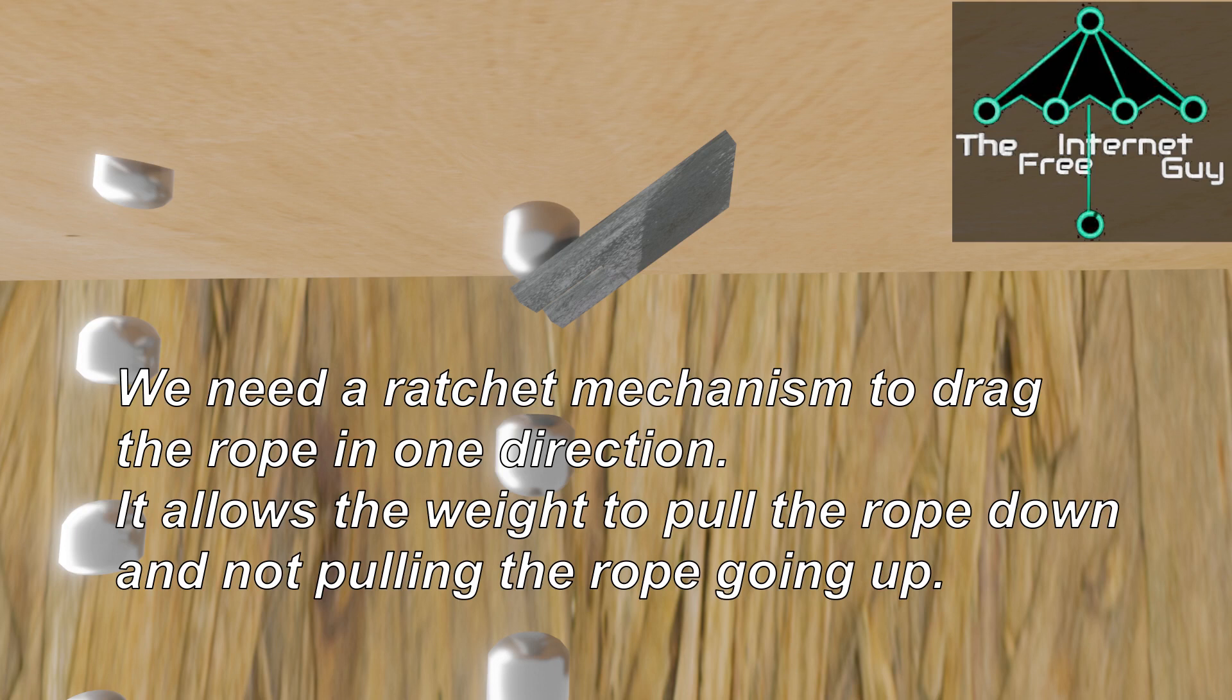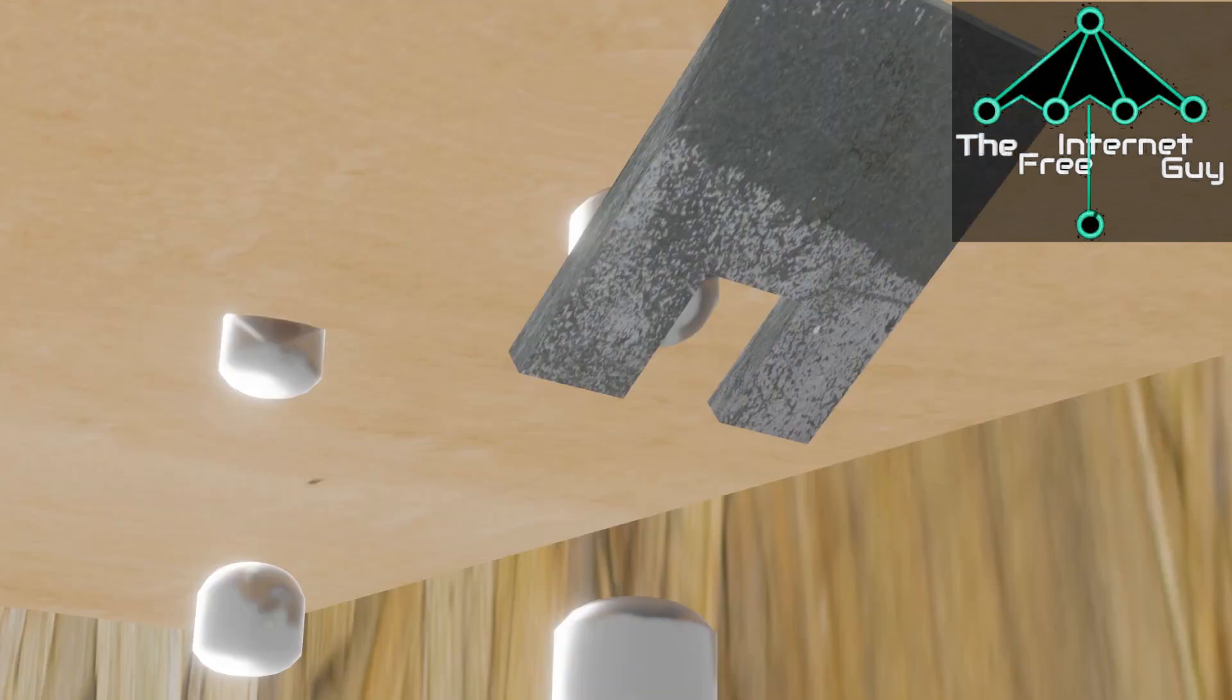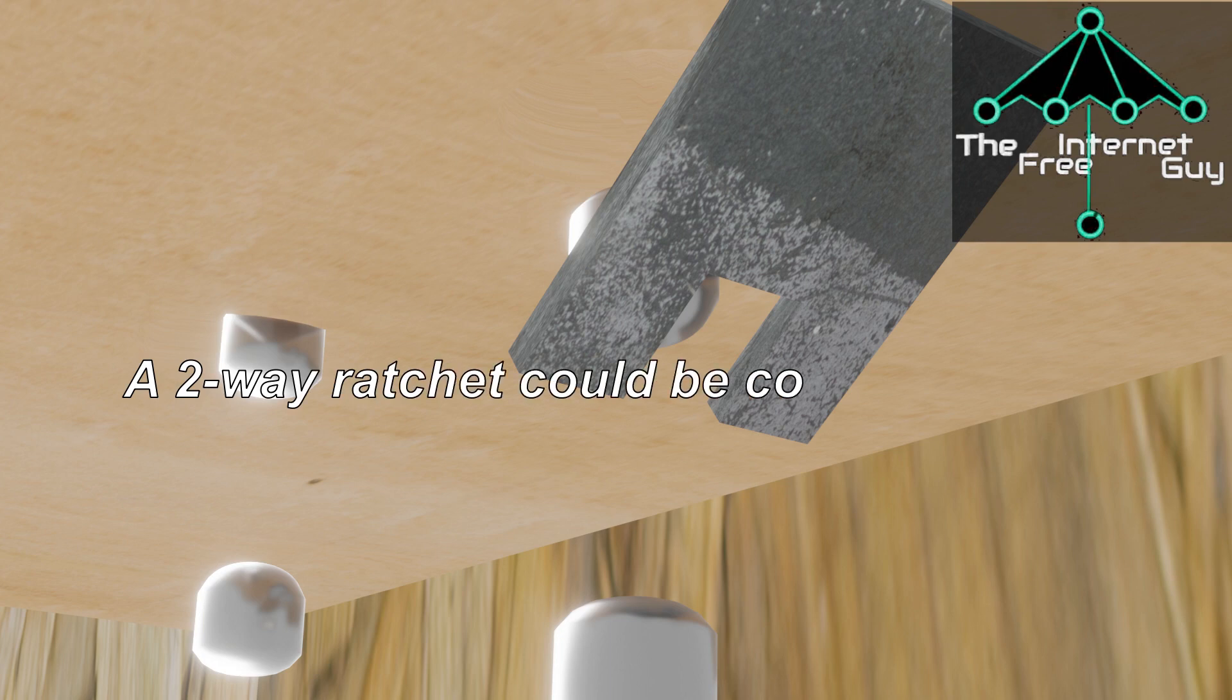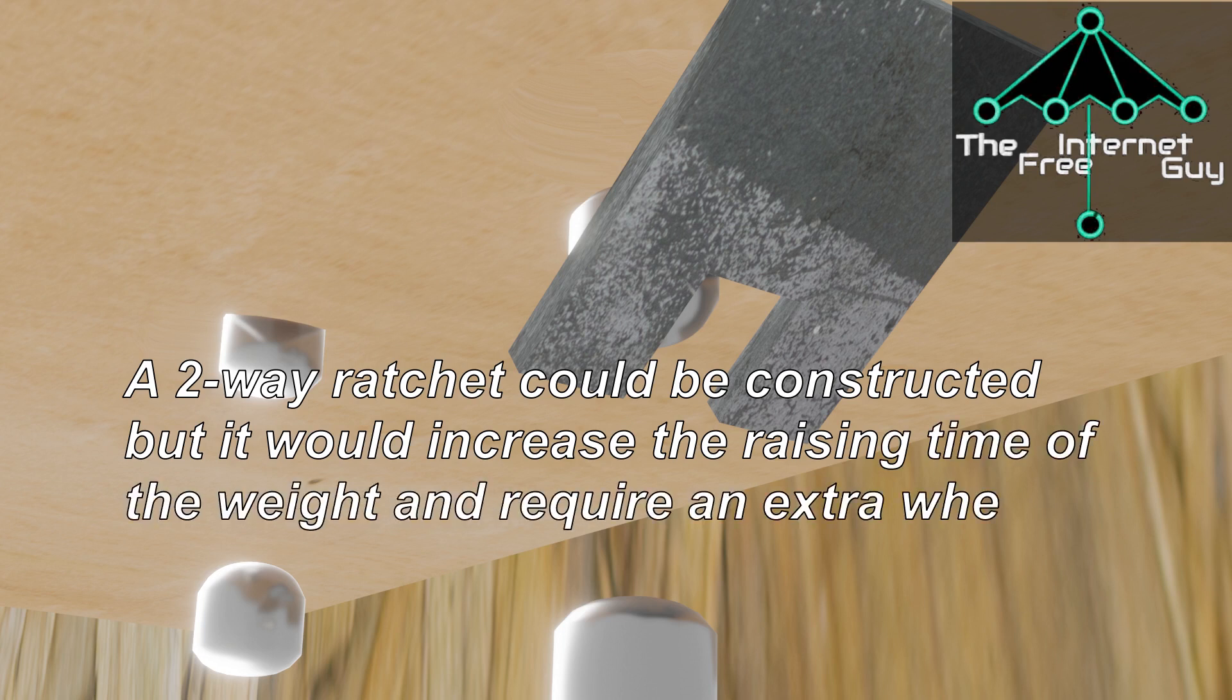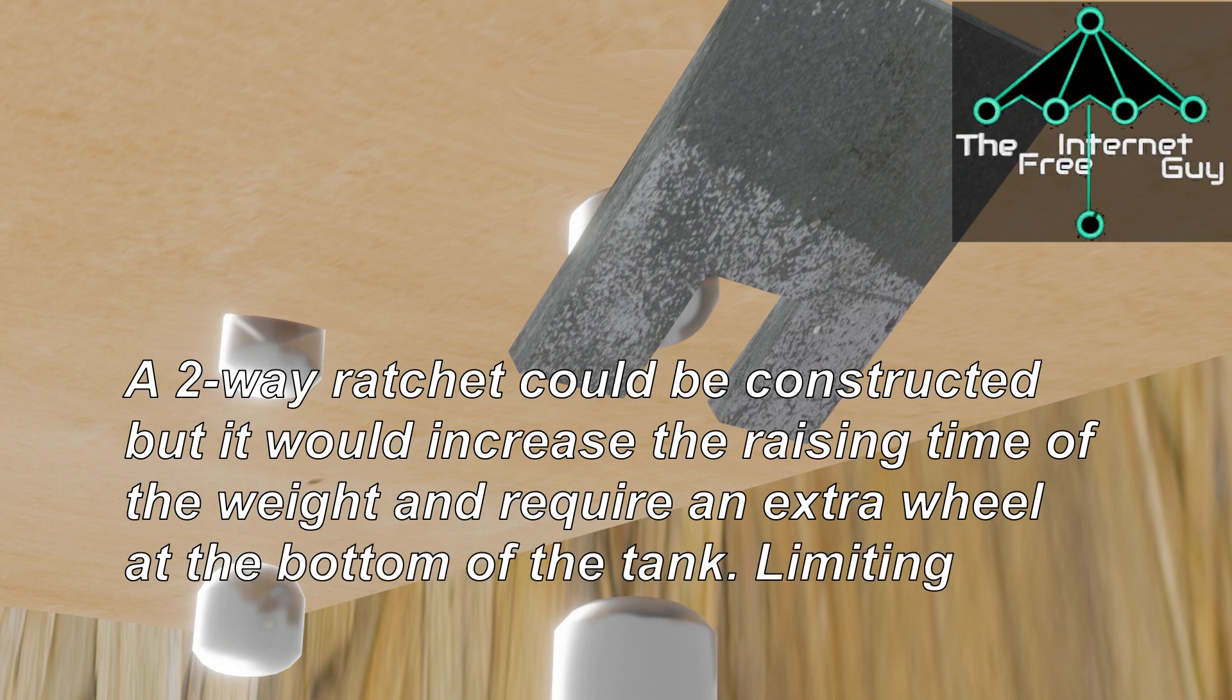A two-way ratchet could be constructed, but it would increase the raising time of the weight and require an extra wheel at the bottom of the tank, limiting the distance that the weight can sink.